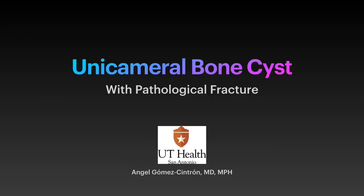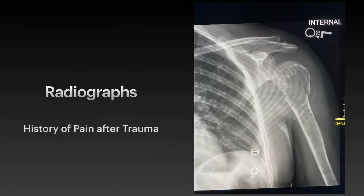Today we're going to talk about unicameral bone cysts with a pathological fracture. This is the case of a 19-year-old patient that presents to the ER with shoulder pain after minor trauma. On initial radiographs, we see a well-defined lucent lesion throughout the proximal humeral diaphysis and metaphysis, and there is a fracture at the level of the proximal metaphysis with cortical discontinuity.